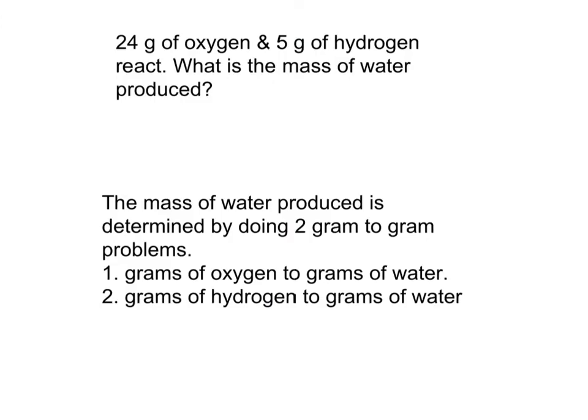Now we're going to do a problem that's different. Instead of starting with numbers of molecules or moles, we're going to start with mass — this is what chemists actually use. You rarely are able to count moles, so you have to begin with grams and change them to moles. In this problem, we're going to start with 24 grams of oxygen and 5 grams of hydrogen.